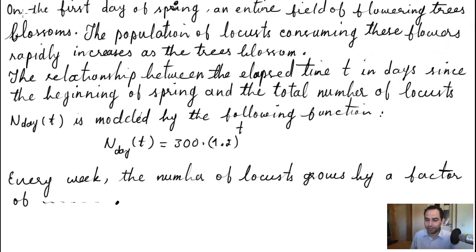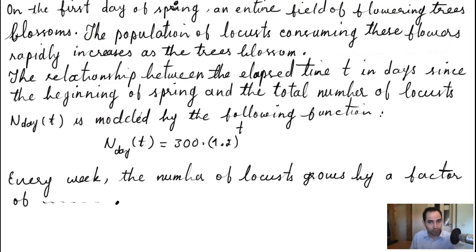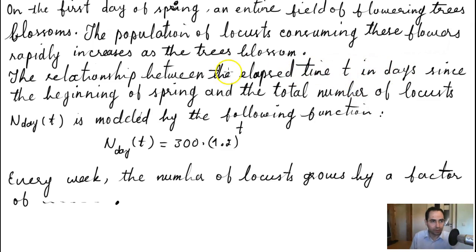Hello and welcome back. In this video we are doing another example from Khan Academy. The question is: on the first day of spring, an entire field of flowering trees blossoms. The population of locusts consuming these flowers rapidly increases as the trees blossom — it's about the population of locusts basically increasing. The relationship involves elapsed time t in days since the beginning of spring.